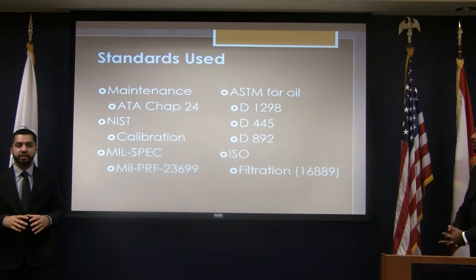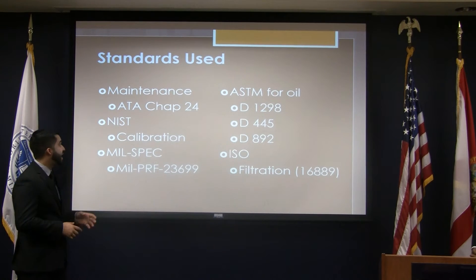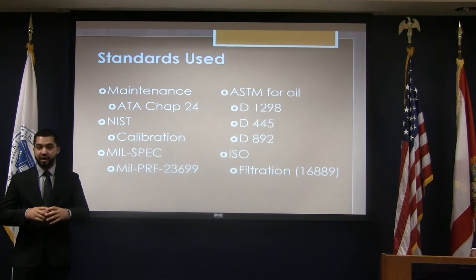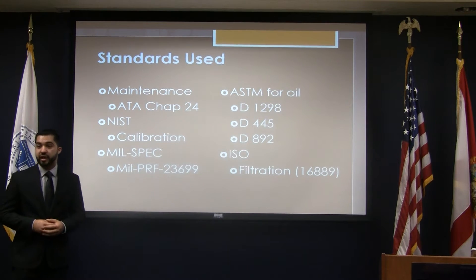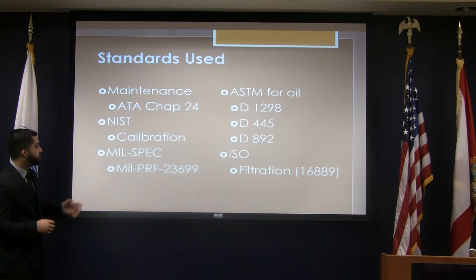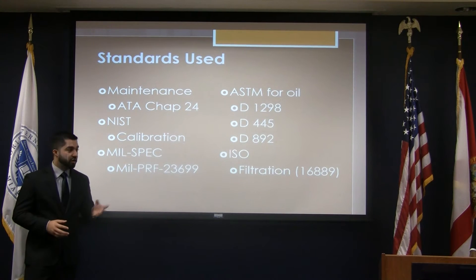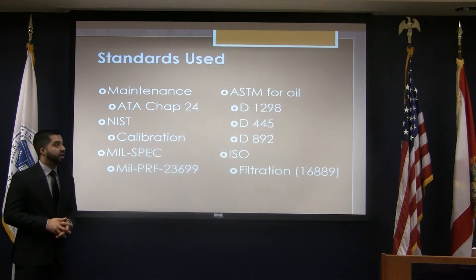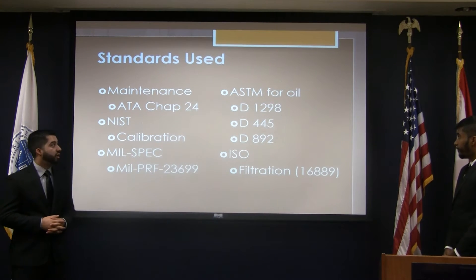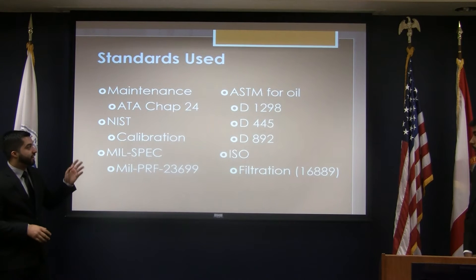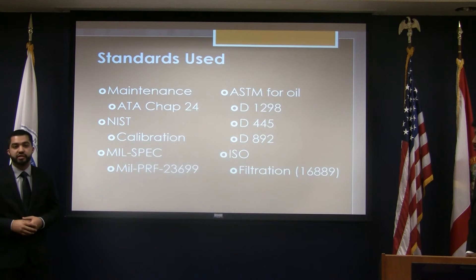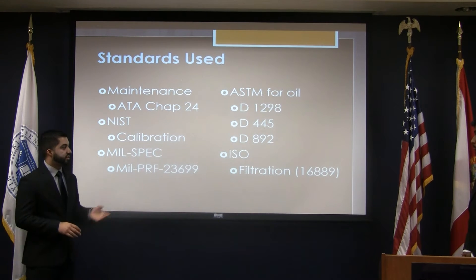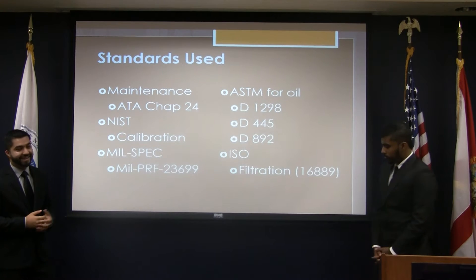Chapter 24 is where we get all our specifics on how to properly service the cart as well as our gauges. Our gauges need to be calibrated every year, so they need to have an NIST calibration certificate when they first come in. Also, the oil we're using has to match what is currently used by UTC Miramar, which is MIL-PRF-23699, also known as Eastman Turbo Oil 2380. The ASTM standards for that oil cover viscosity, density, and foaming characteristics. Our filtration system will also have to pass a test standardized by ISO 16889.